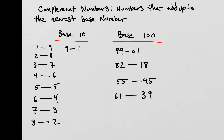A couple more examples: if we're using base 100, the complements are two numbers that add up to the nearest base number. So 99 and 1 are complements of each other, 82 and 18 are complements, 55 and 45 are complements, and 61 and 39 are complements. There are quite a lot of numbers that add up to base 100, and even more when we work with base 1,000.